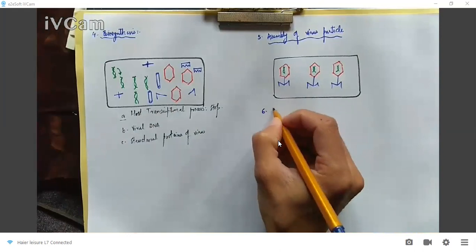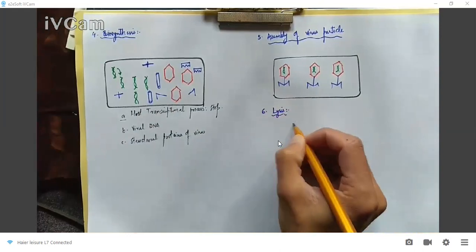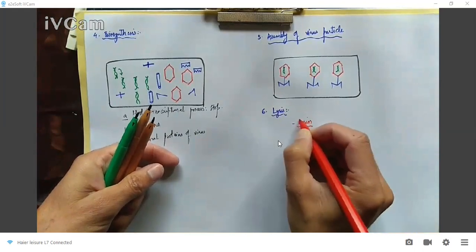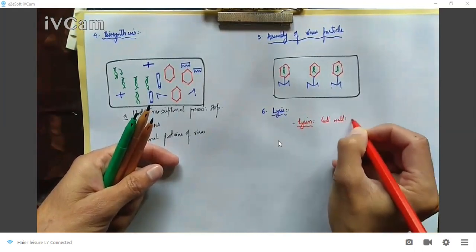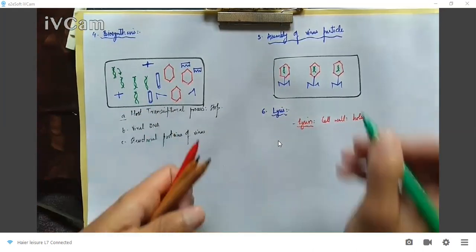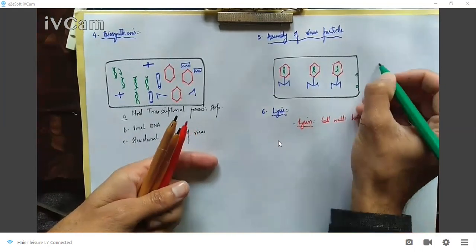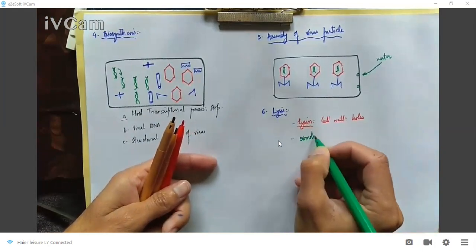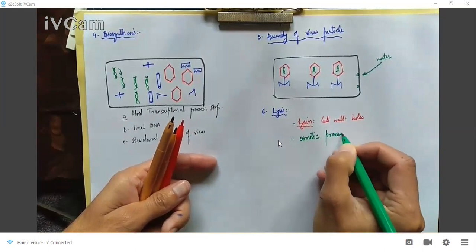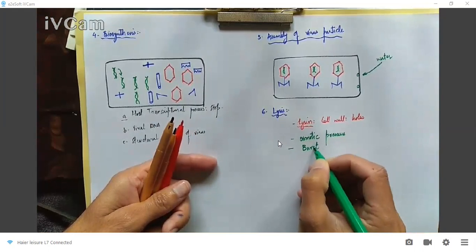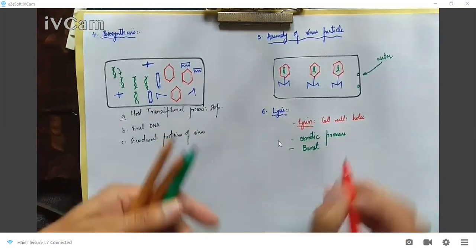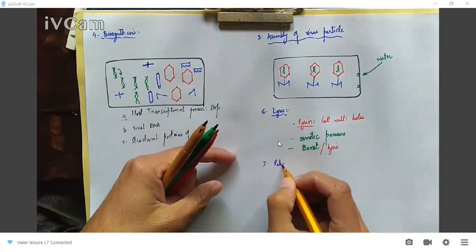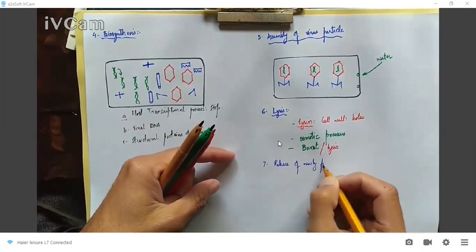The last step is lysis. A protein called lysin is produced, which creates holes in the bacterial cell membrane. Water enters into the cell, and the cell bursts. This bursting — or lysis — of the bacterial host is followed by the release of newly formed phages, which then continue the infection cycle.